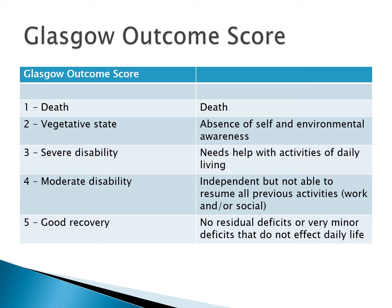Clearly dying is a poor outcome, as is being left in a vegetative state — scores one and two. Severe disability, score three, describes somebody needing help with activities of daily living: washing, dressing, feeding, cleaning themselves. Moderate disability, score four, means patients are independent but perhaps have not been able to get back to all their previous activities such as work or social lives. And number five, a good recovery — these people do not have any residual deficits, or the deficits are so very minor that they do not affect their daily life.